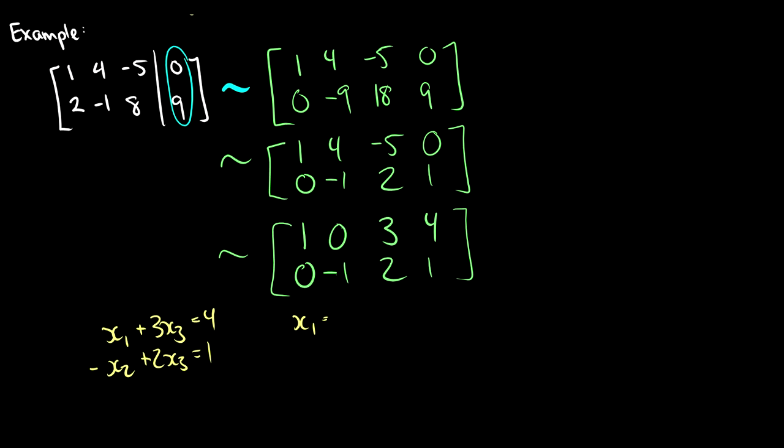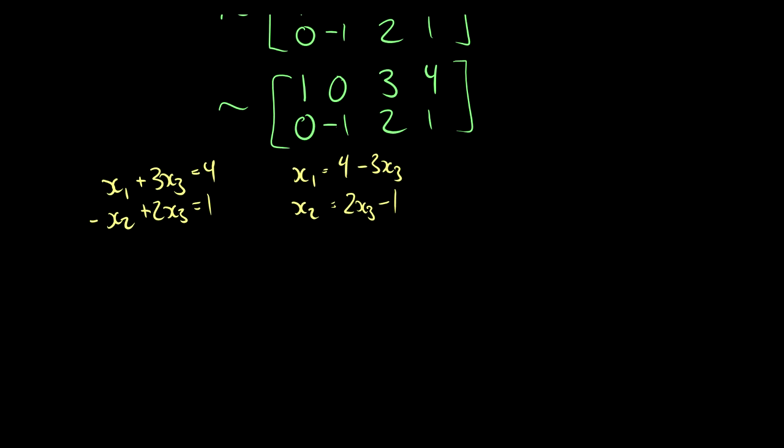So x1 is going to be 4 minus 3x3 and x2 is going to be 2x3 minus 1. Now what we can do is solve for x like we did before. We can say x is equal to x1, x2, and x3.